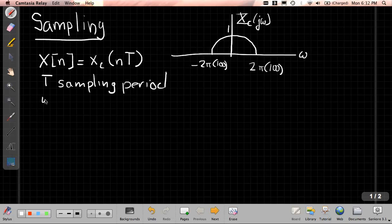And then we sometimes say the omega_s, which is 2 pi over T, is the angular or radian sampling frequency.